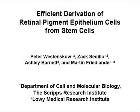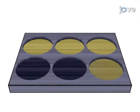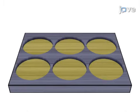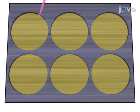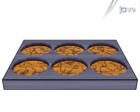The overall goal of this procedure is to reproducibly derive high quality retinal pigment epithelium, or RPE, from stem cells. This is accomplished by first growing inducible pluripotent stem cells to confluency. In the second step, the media is changed to direct the cells into RPE fates.